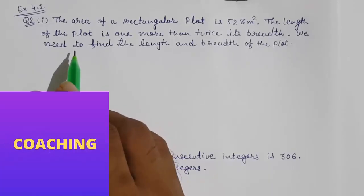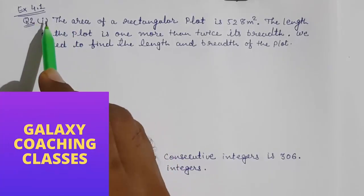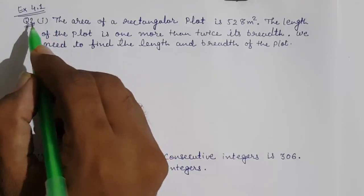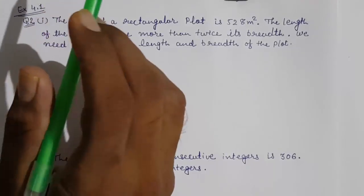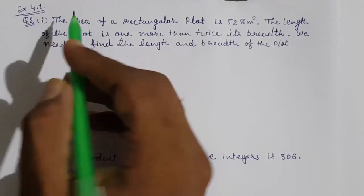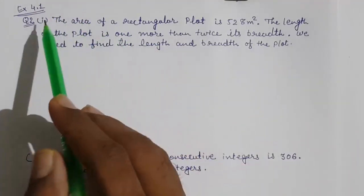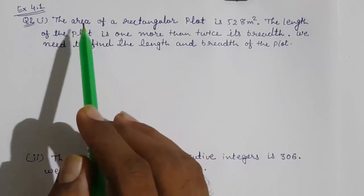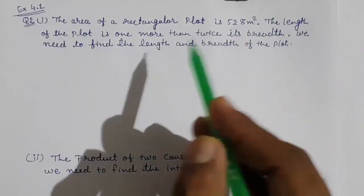Hello friends, today we are going to solve CBSE Class 10th Maths Exercise 4.1 Question Number 2 — represent the situations in the form of quadratic equations. We are going to solve these few sums and we have to just make quadratic equations out of them; we don't have to solve them.